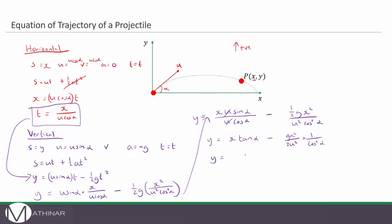We can improve on this, copy the left part and then the right part. One over cos squared is sec squared so this can be rewritten as g x squared over two u squared multiplied by sec squared alpha and also you should have learned that sec squared alpha is equal to one plus tan squared alpha.